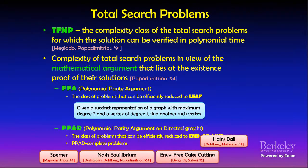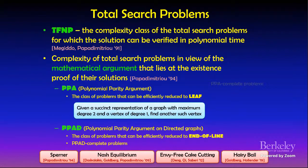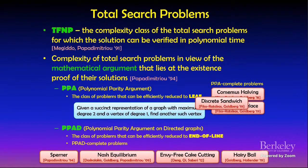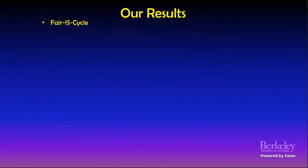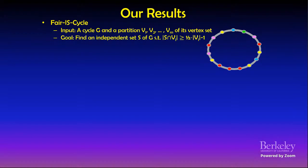In 1994, Papadimitriou initiated the study of total search problems in view of the mathematical argument behind existence proofs of their solutions. He defined several complexity classes, each corresponding to a certain mathematical argument. One such class is PPA (polynomial parity argument), defined as those problems reducible to the LEAF problem: given a circuit representing an undirected graph with maximum degree 2 and a vertex of degree 1, find another vertex of degree 1.